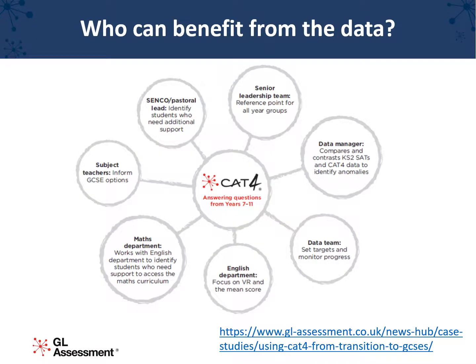St Peter's Collegiate School in Wolverhampton shared with us what information the different types of staff in school find useful. As you can see, the CAT4 data benefits staff at all levels. The data team compare the ability scores with Key Stage 2 SATs results to identify anomalies and to ensure the effective setting of targets. The senior team use it to monitor all year groups. It enables the English and maths departments to easily identify students who need more support and also supports the SENCO's decisions. Find out more by reading the linked case study.